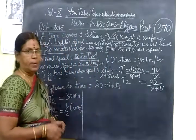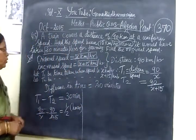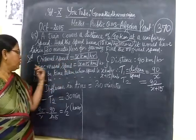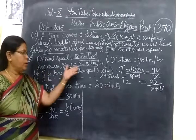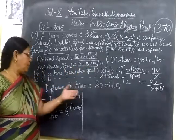Then find the original speed. The original speed of the train is given as x km per hour, and increased speed is x plus 15 km per hour.